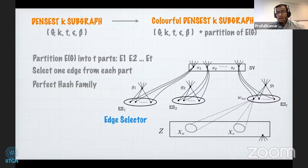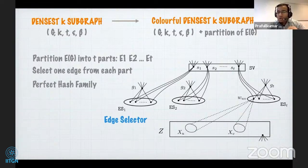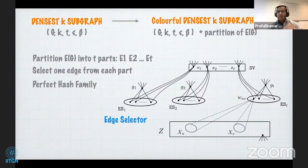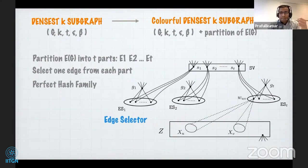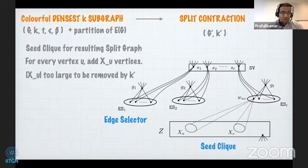The high-level idea for the reduction from densest k-subgraph to colorful dense k-subgraph: partition the edges E(G) into t parts E1 to Et and select one edge from each part. We not only want t edges spanned by k vertices — we want exactly one edge selected from each part. This is a standard trick using perfect hash families to go from this problem to another, and will take FPT time in k + t.